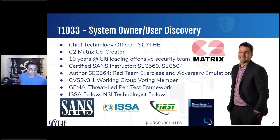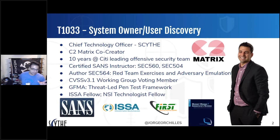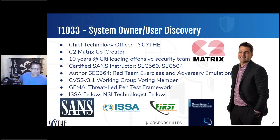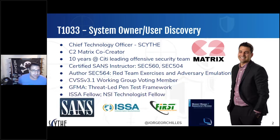Along with Bryson, we started the C2 Matrix. It started over lunch at DerbyCon — he was doing a talk, I was releasing a two-day red team adversary emulation class for SANS. Empire had just gone end-of-life, and that left everyone asking 'what do we do now?' I started talking to a bunch of people asking what C2 they use — Jeff McJunkin was one of them — and that's how the C2 Matrix came out. Before that, I worked at a large financial institution for 10 years leading the offensive team.